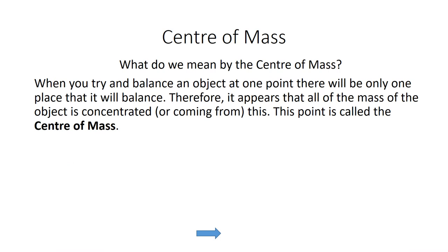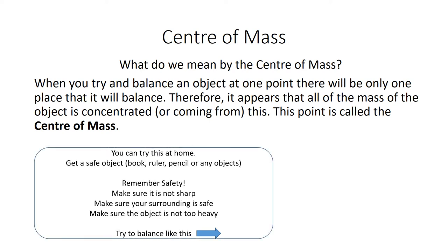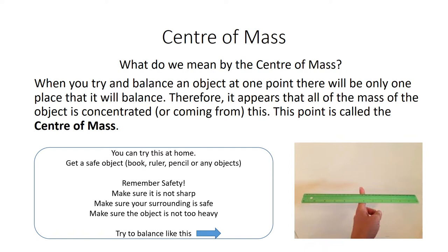What do we actually mean by the centre of mass? When you try and balance any object on a point, if the object stays stationary, then its centre of mass is above its base. If the object is not stationary - it wobbles or falls over - then its centre of mass is not necessarily above its base. Here's a little experiment: get a book and a ruler and try to balance it on one finger. A ruler should balance roughly around halfway, because that's where about half of its mass is acting through the centre.